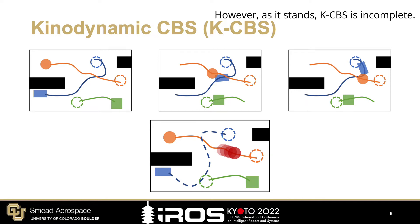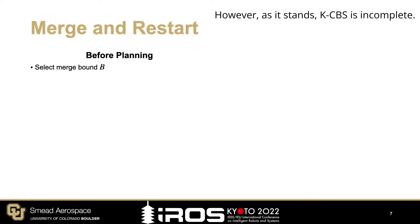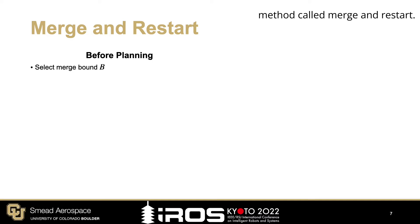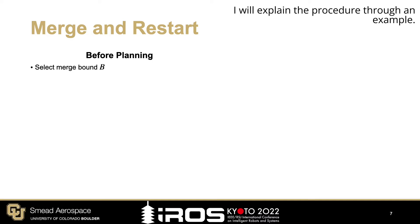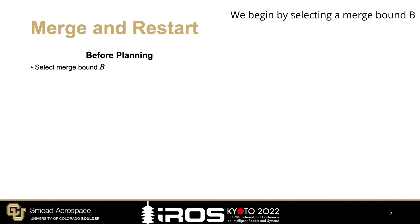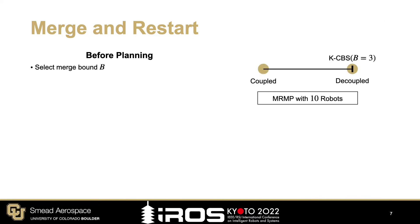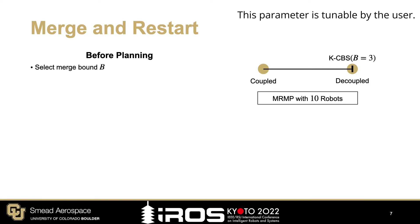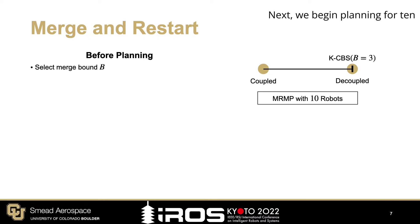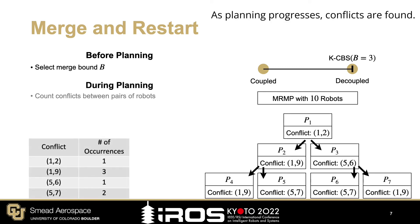However, as it stands, KCBS is incomplete. To achieve completeness, we employ a method called merge and restart. We begin by selecting a merge bound B prior to planning. We denote the merge bound of KCBS by placing it inside parentheses. This parameter is tunable by the user. For example, we can set B equal to 3. Next, we begin planning for 10 robots in a fully decoupled fashion.